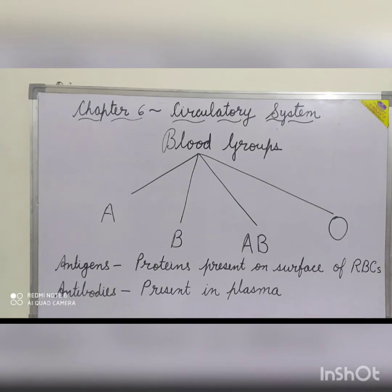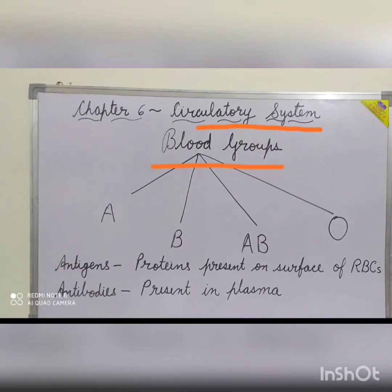Good morning students. Today we will continue with our chapter number six, the circulatory system. Today we will study about the blood groups present in human beings.